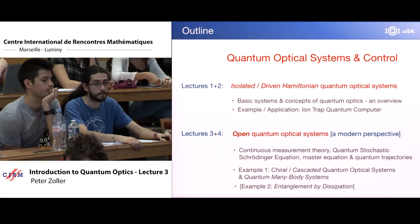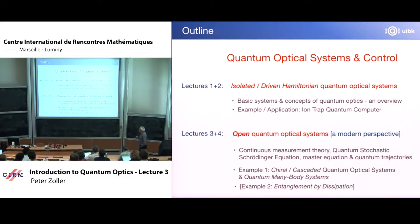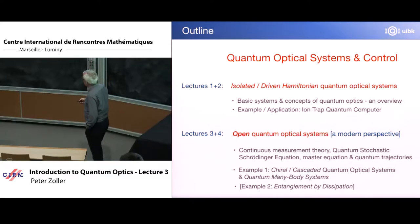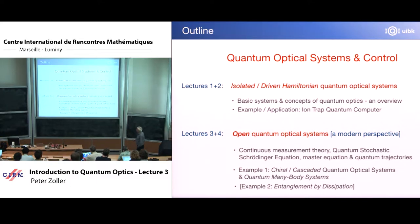I had in mind to give you two examples, and I decided this morning I will be running out of time so I put the second one in parenthesis. Maybe some of you have heard about chiral quantum systems or cascading quantum systems — they have interesting applications in a quantum information context. We recently wrote a review with experimentalists about some of these things. I will talk about the cascaded master equation and give certain examples. This is the outline of today's lecture.